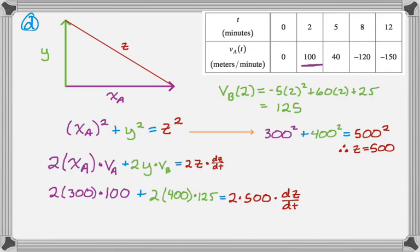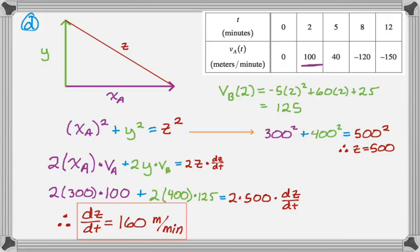So Z is 500, and then times DZDT. And then what I want to find is DZDT, so what I could do is just divide through by 2 times 500 and put a box around it. But what I'll do is actually simplify it. I actually did this one on paper, if anyone's curious. So DZDT is 160, and then they actually tell you that it's meters per minute, but meters per minute. People found that confusing, but it's really just a right triangle related rates question. And I hope you found this helpful. Good luck.